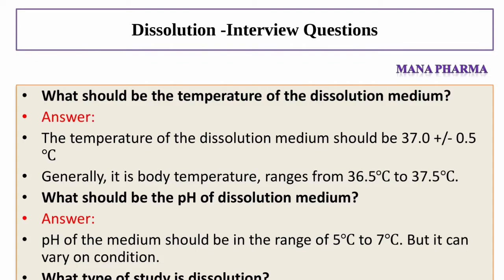What should be the temperature of Dissolution media? Answer: The temperature of the Dissolution medium should be 37 plus or minus 0.5 degrees, which is generally the body temperature ranging from 36.5 to 37.5. What should be the pH of Dissolution media? Answer: The pH of the Dissolution medium should be in the range of 5 to 7, but it can vary depending on conditions.